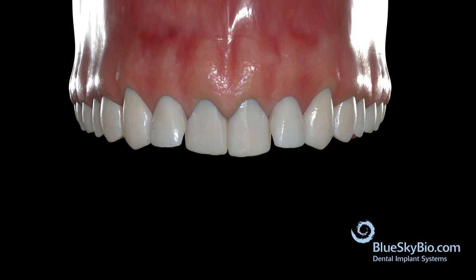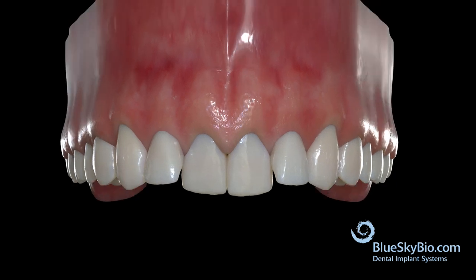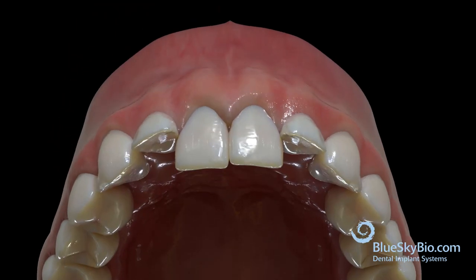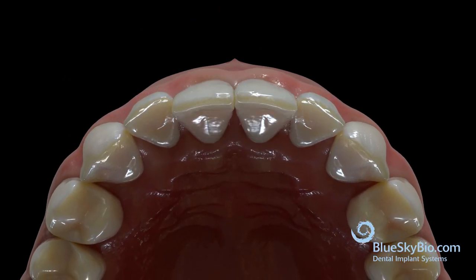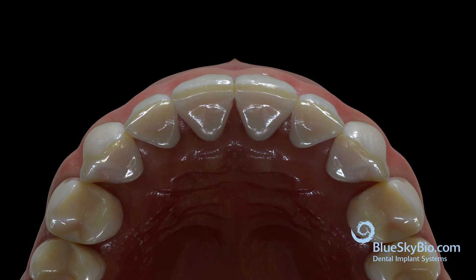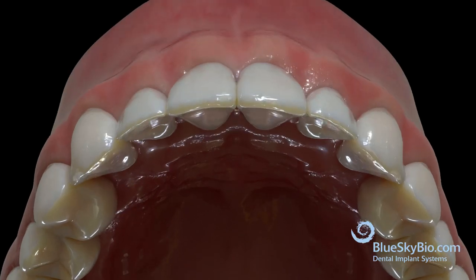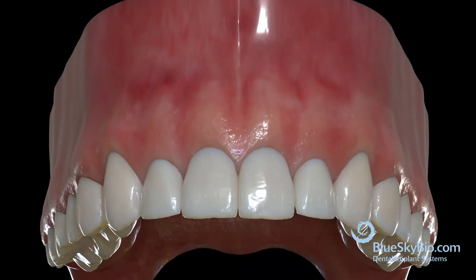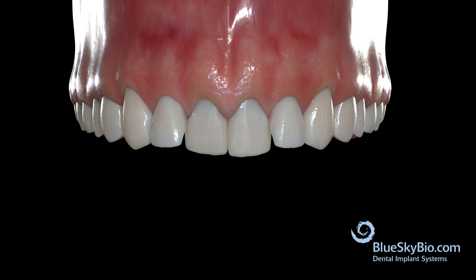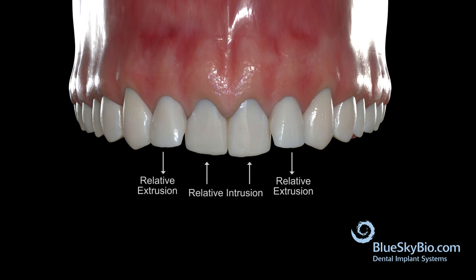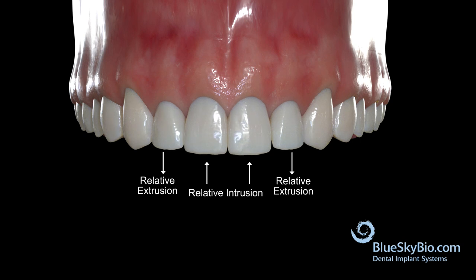Noting these discrepancies can help you to properly anticipate the final vertical relationship of each tooth when their buccal-lingual position is corrected. Class II Division II patients can be great examples of both presentations, with the centrals exhibiting relative intrusion and the laterals exhibiting relative extrusion.